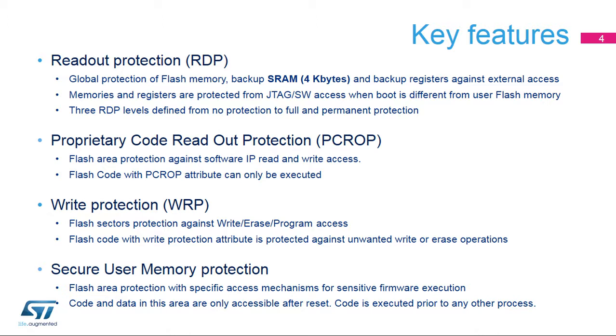Three levels of RDP protection are defined, from level 0, which offers no protection at all, to level 2, which has full and permanent protection.